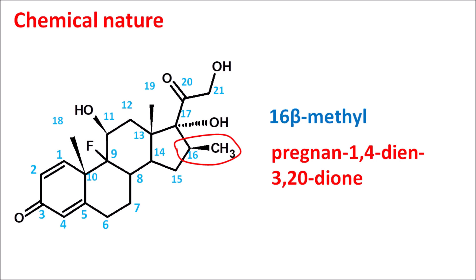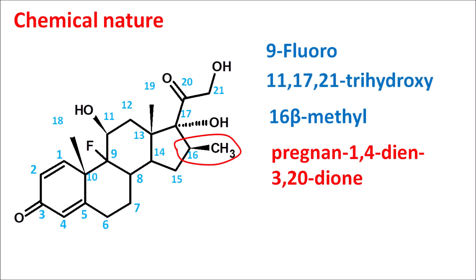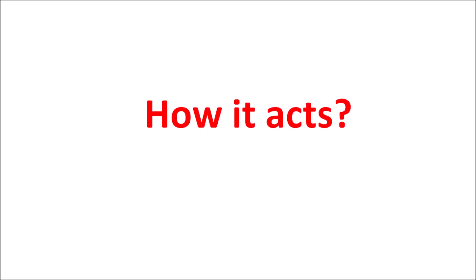It is also having a fluorine group at the ninth position, written as 9-fluoro. Hydroxyl groups are present at the 11th, 17th, and 21st positions, giving 11,17,21-trihydroxy. That is the complete IUPAC name of betamethasone.